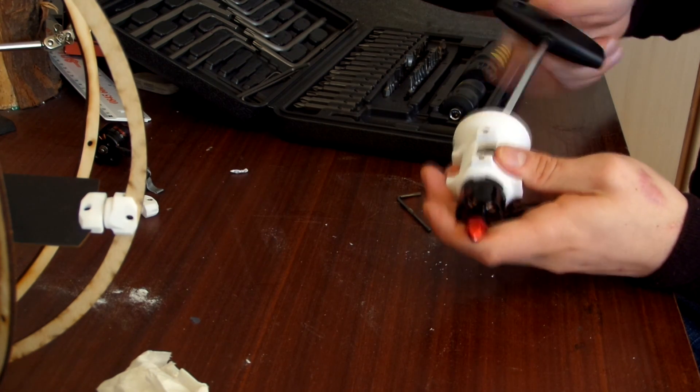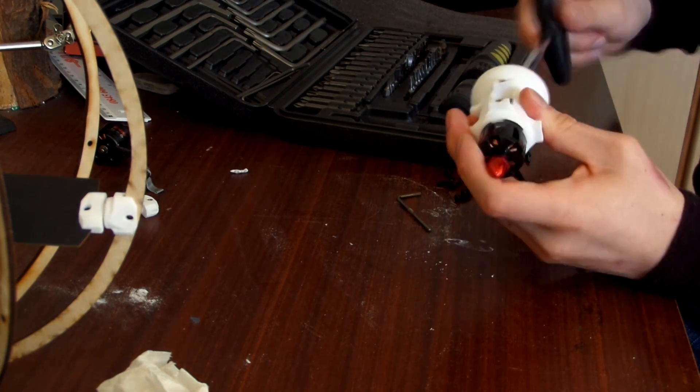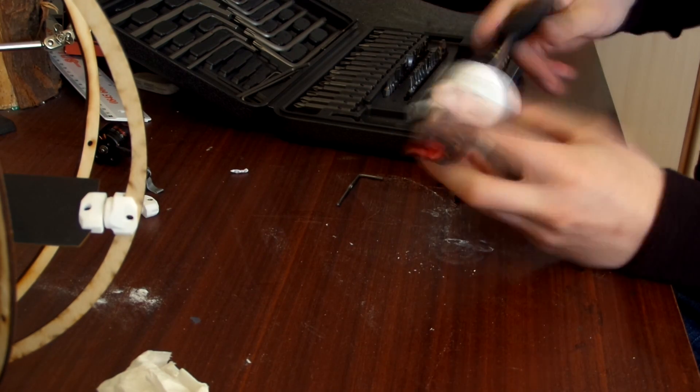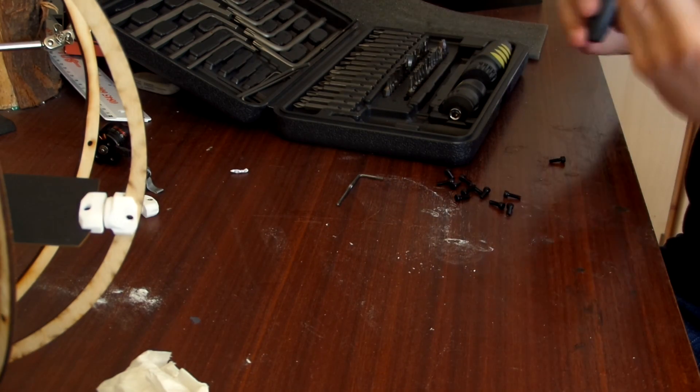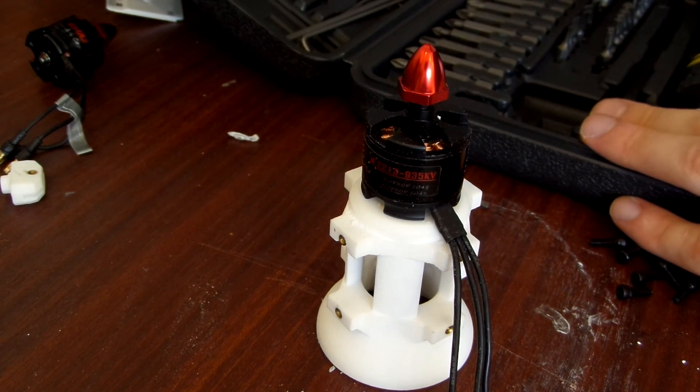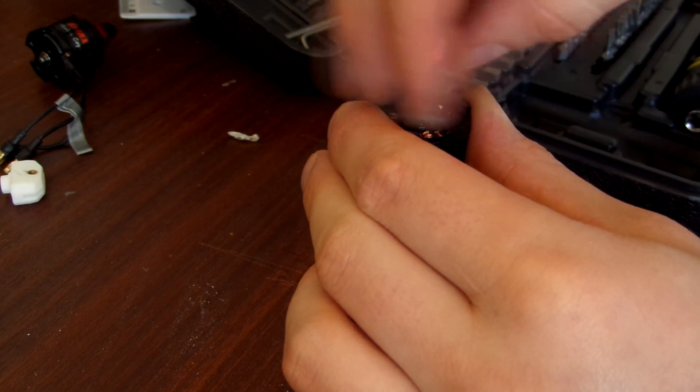So first of all I bolted the main motor into the motor hub, which as I mentioned in the last video is just 3D printed nylon. And I bolted through with 4 bolts so it's a really nice secure connection.